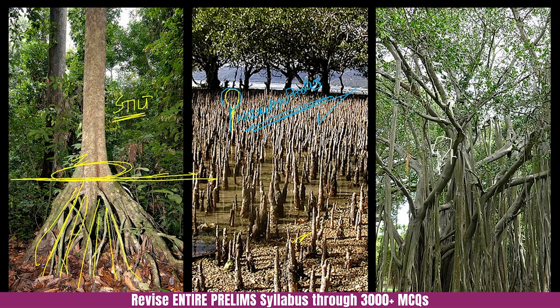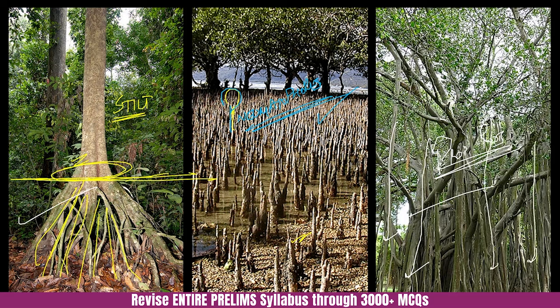These prop roots of the banyan tree are different from stilt roots. Prop roots are hanging from the branches. In various sources, sometimes the same term is used for prop roots and stilt roots — but they are different. Prop roots are hanging from branches because the amount of weight and oxygen requirement is so great that roots grow downward from the branches.